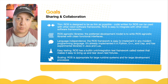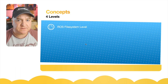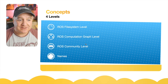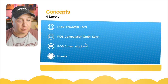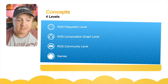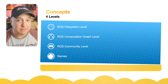There are four main concepts in ROS. The first is the ROS file system level - where all the files are. The second is the ROS computational graph level, which is a conceptual model we'll look at shortly. Third is the ROS community level - how we as a community share packages and communicate. And fourth, there's the naming system with naming conventions.